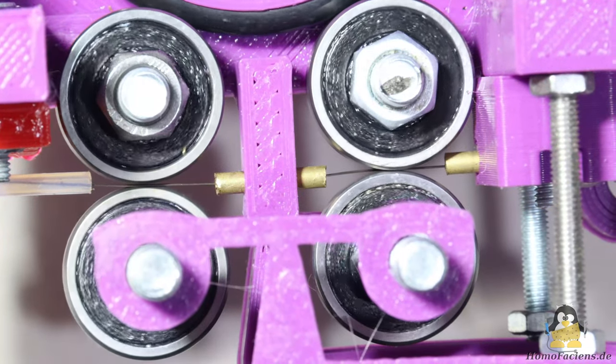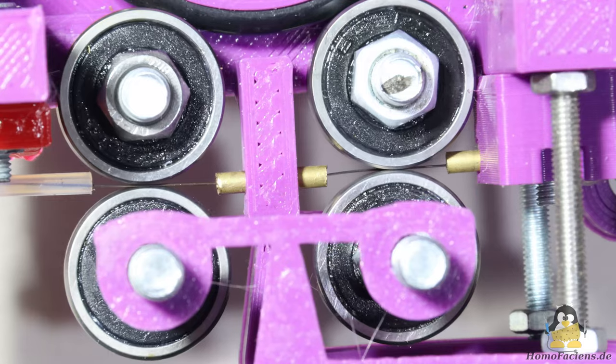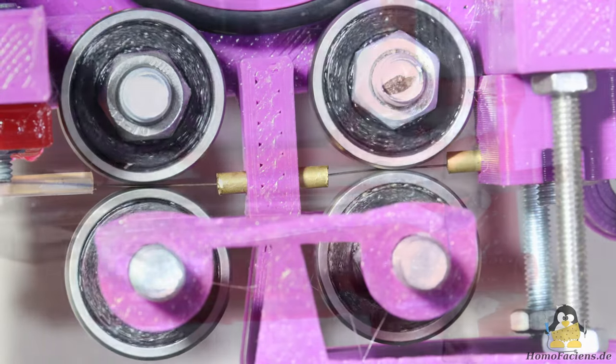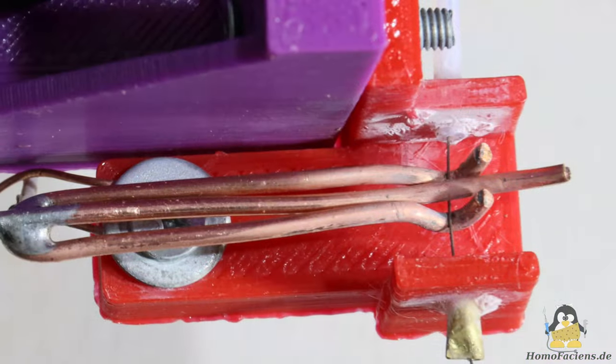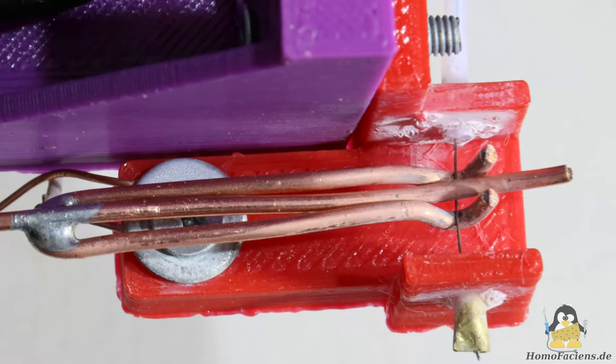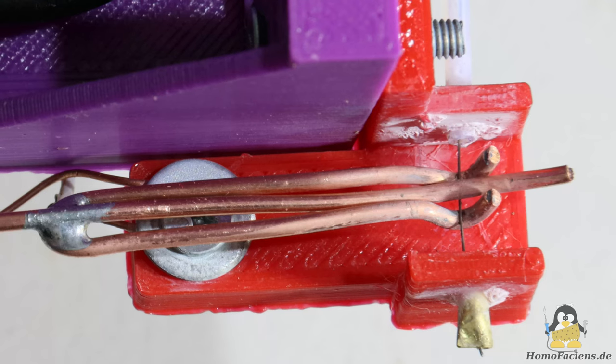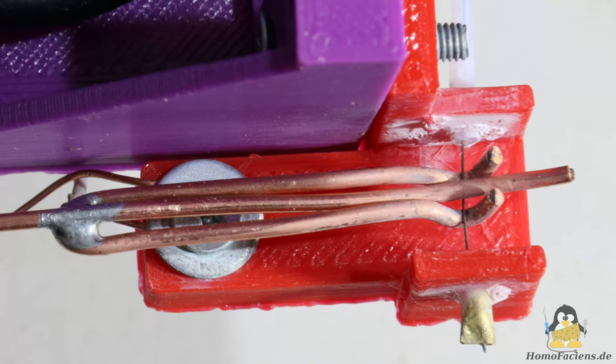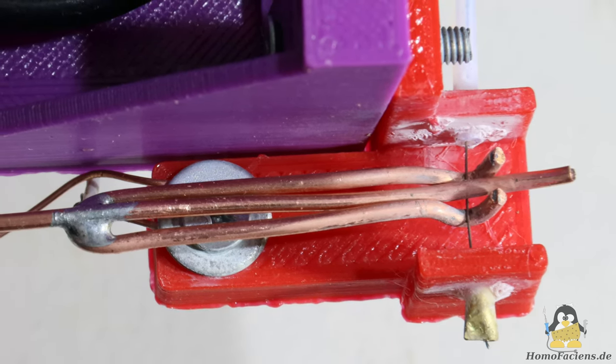Three guides ensure that the wire stays in position between the ball bearings. I spent most efforts in designing the contact point of the supply voltage with the electrode wire.